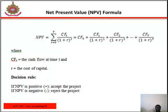The NPV formula uses CF as the cash flow at time t and r as the cost of capital. The decision rules for NPV are: if the NPV is positive, we accept the project; if the NPV is negative, we reject the project.